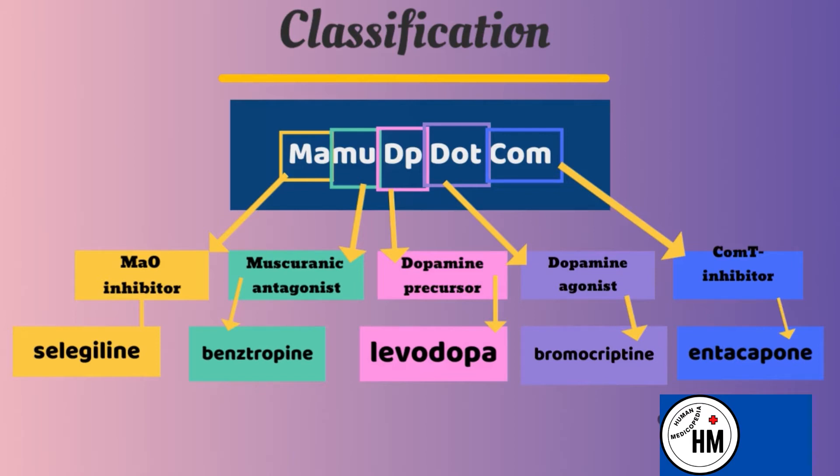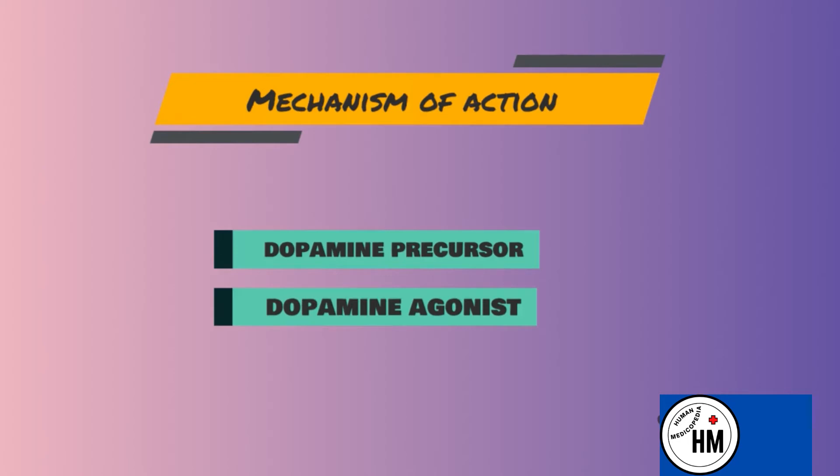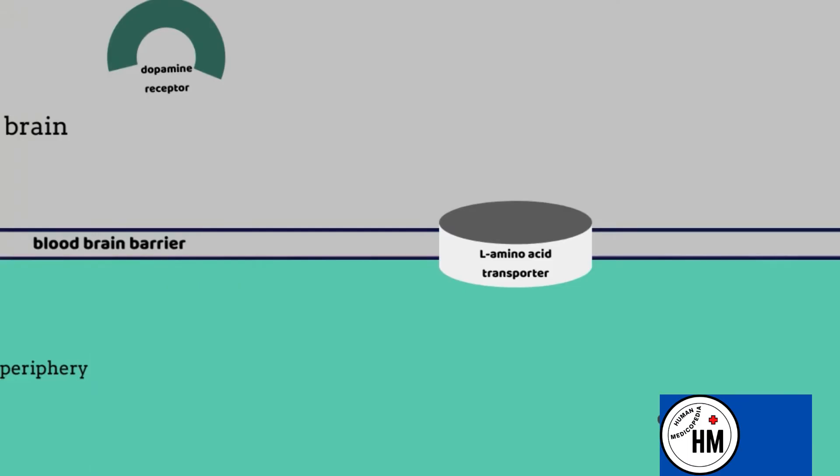First, the mechanism of action of dopamine precursor and dopamine agonist. Instead of dopamine, we use levodopa as a dopamine precursor because it readily passes through the blood brain barrier through L-amino acid transporter. You can see in this animation the levodopa is entering from the periphery to the brain through L-amino acid transporter.